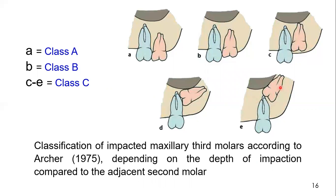Class C is the most difficult to extract. There are three factors: number one, more bone has to be removed. Second, access is difficult — it is deep, also due to the erupted second molar. Third and most importantly, it is closer to the maxillary sinus, so complications involving the maxillary sinus can occur, or the tooth can be dislodged into the maxillary sinus.